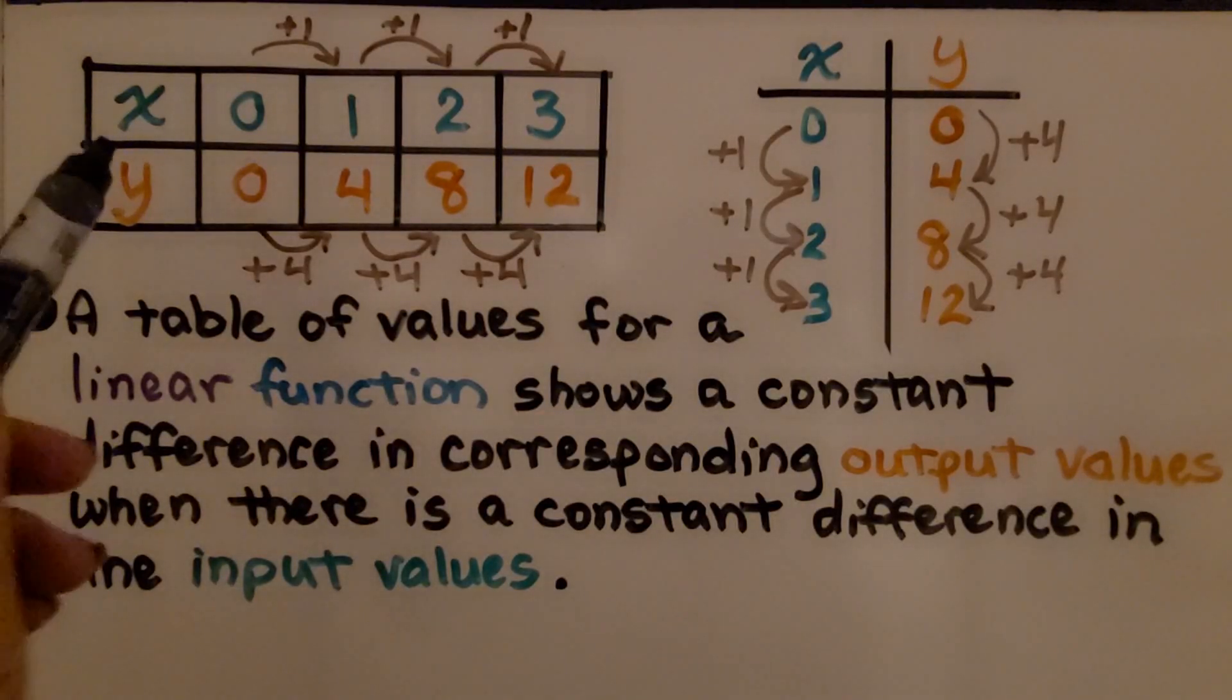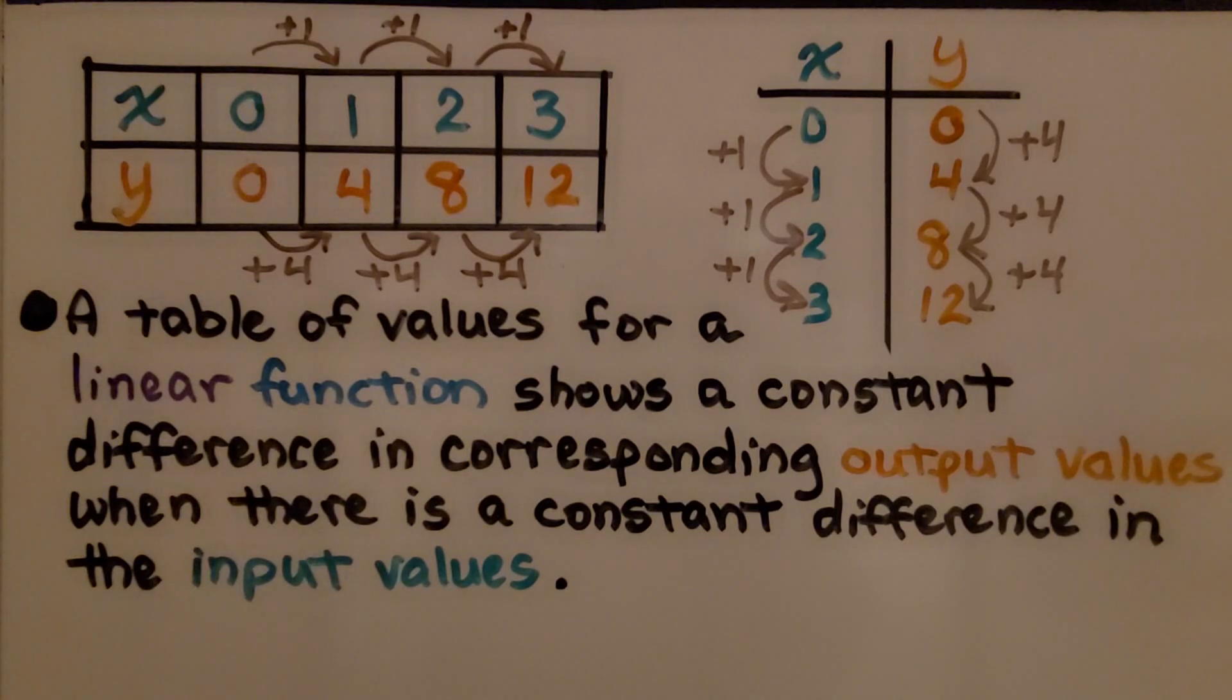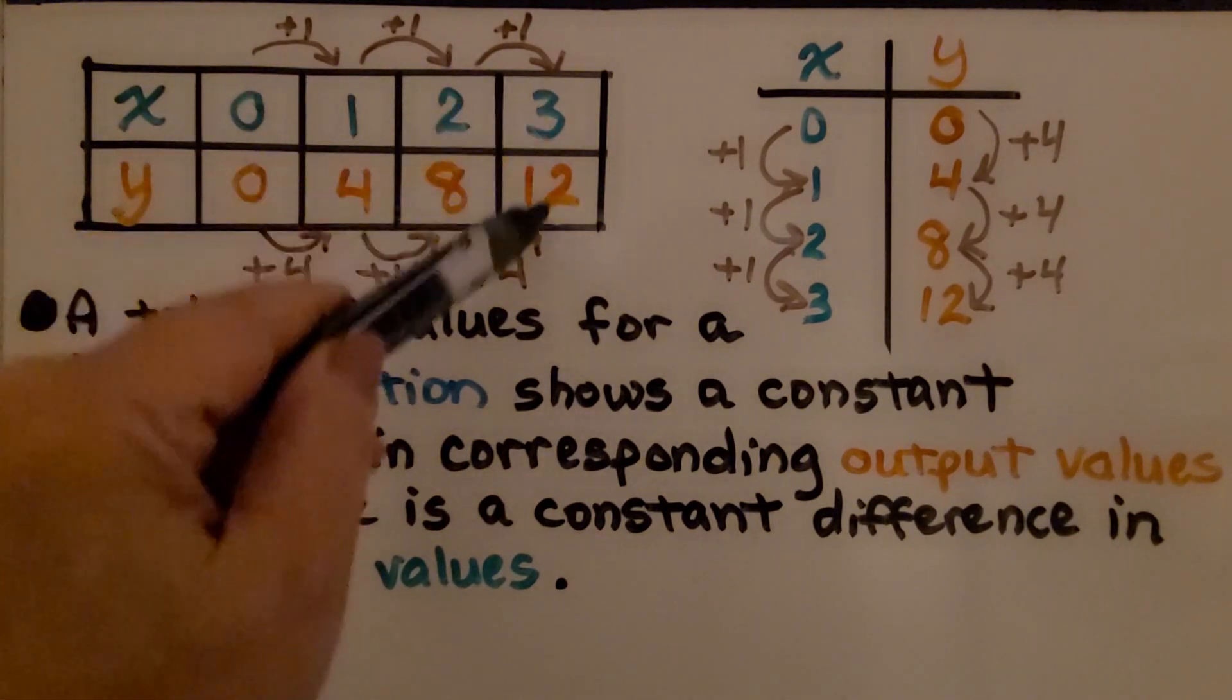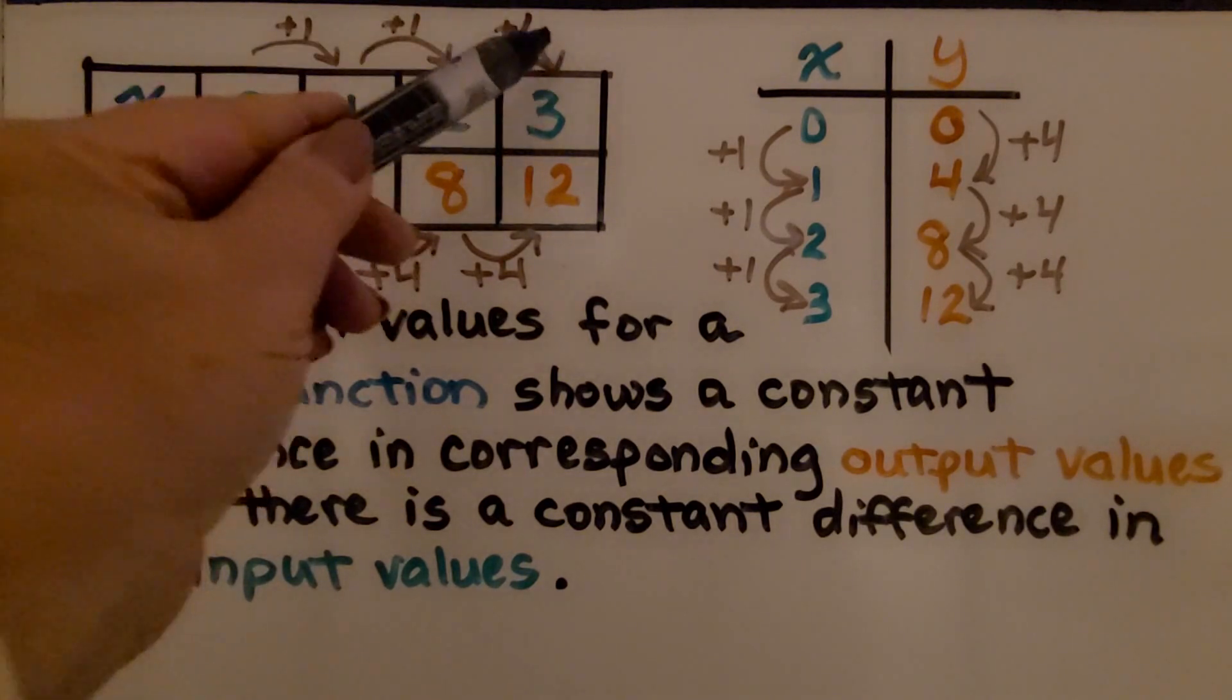Here we have a horizontal table of values and a vertical table of values that are the same. We can see our x and y values. We have 0, 0, 1, 4, 2, 8, and 3, 12. The x values are going plus 1, plus 1, plus 1.